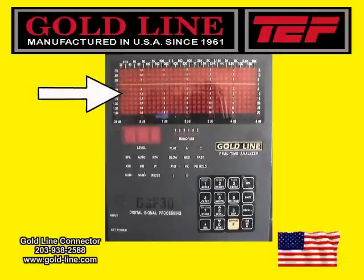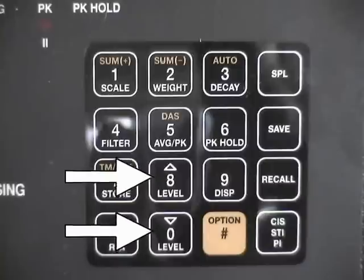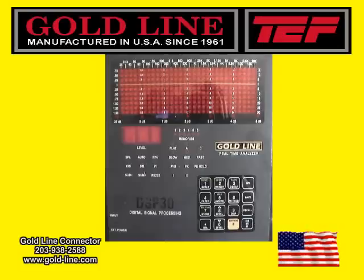The first thing you will notice is the large display on the face of the meter. This display is large enough to easily view the dynamic response of a room. The DSP30 captures a full 85 dB of accurate and detailed information. The large 85 dB resolution can be displayed on the screen with the use of the scroll arrows. On the bottom of the screen, the LED lights will show you what scale your measurements are displayed in.